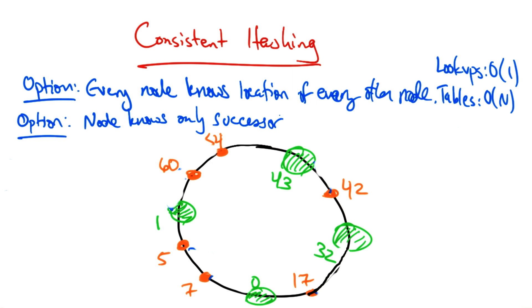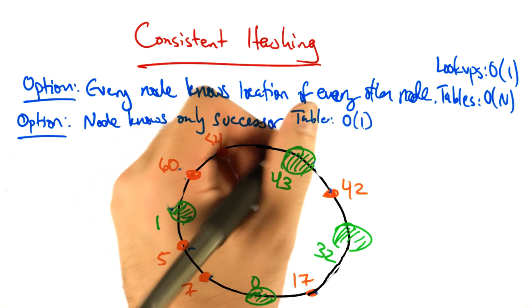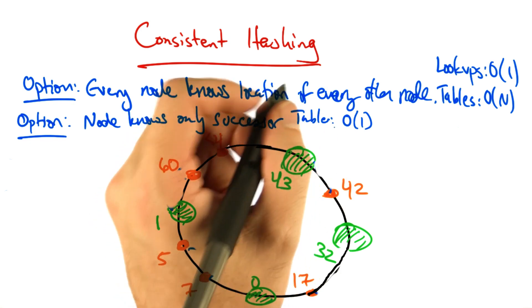Another option is that each node only knows the location of its immediate successor in the ring. So for example, node 32 would know the location of node 43, but of no other node. This results in a small table of size order 1.